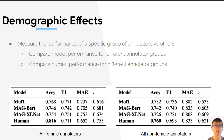We can also measure the performance of a specific group of annotators as compared to other annotators. To do this, we can compare model performance for different annotator groups, and also compare human performance for the different annotator groups. For example, we can create a group of all-female and all-non-female annotators, and then measure how accurate these predictions are. The top three models are existing state-of-the-art models trained for the MOSE dataset. When trained on data for all-female annotators, as seen on the left, they are more accurate than when trained on all non-female annotators, presented on the right.